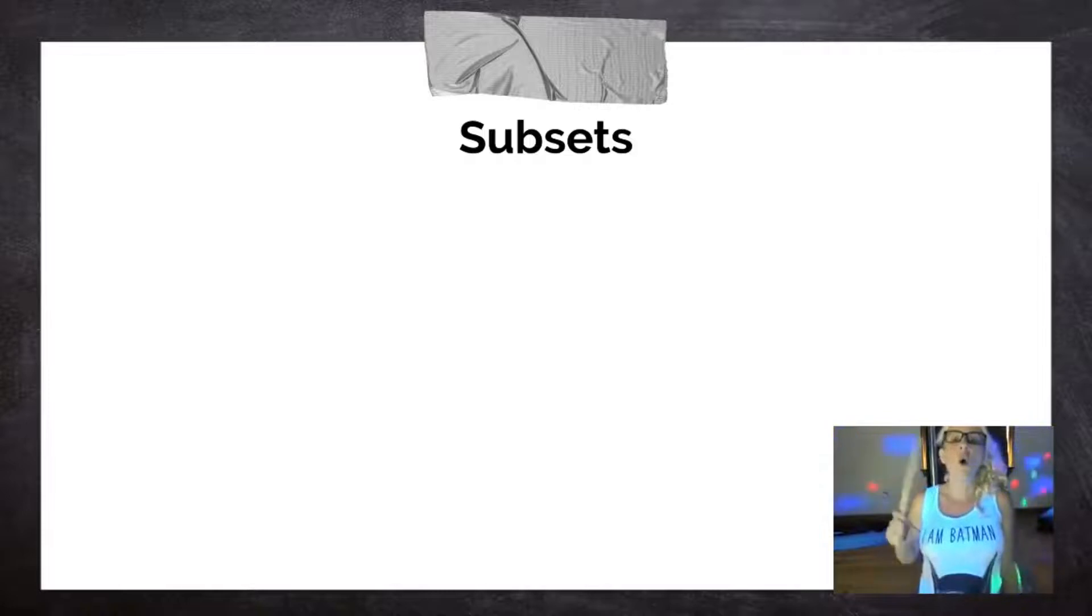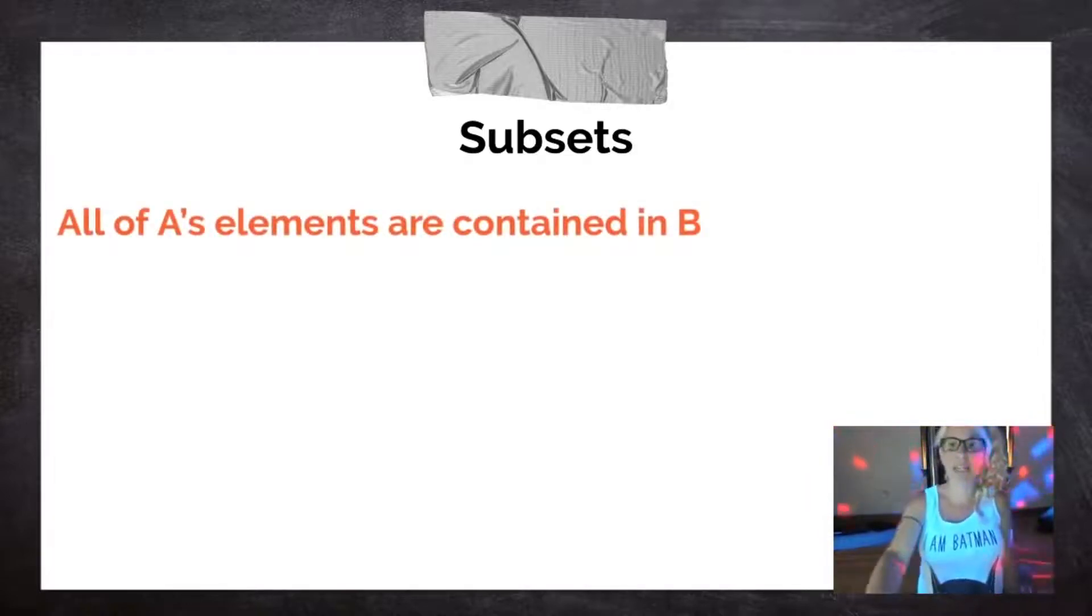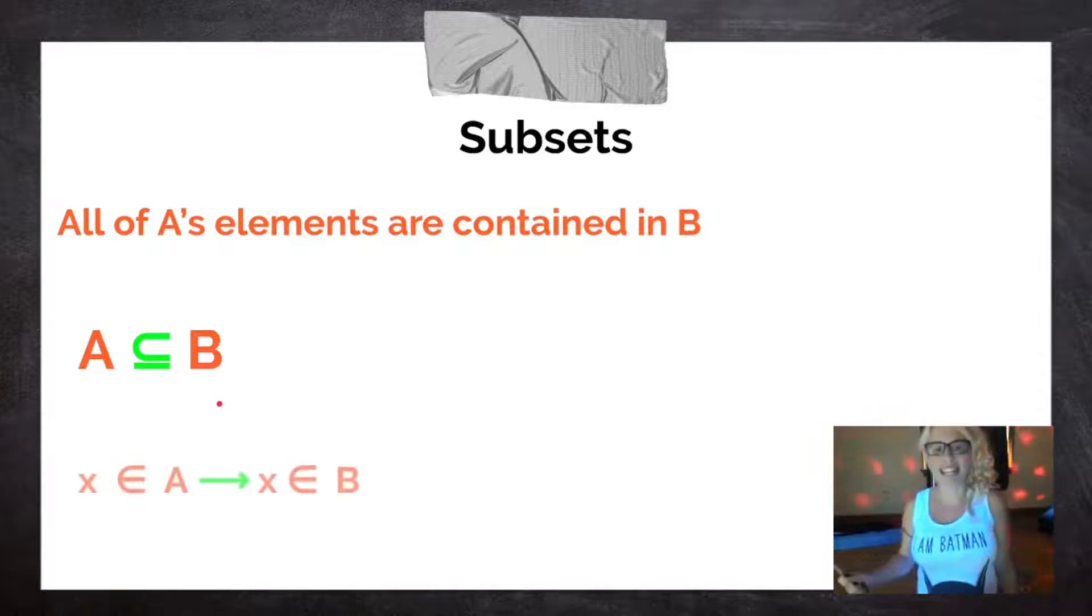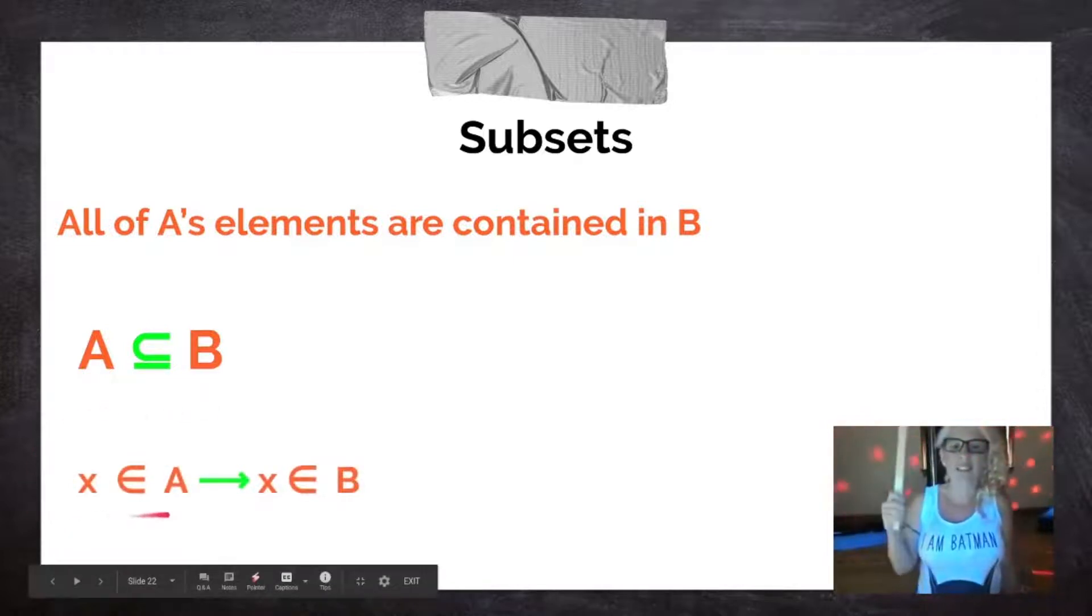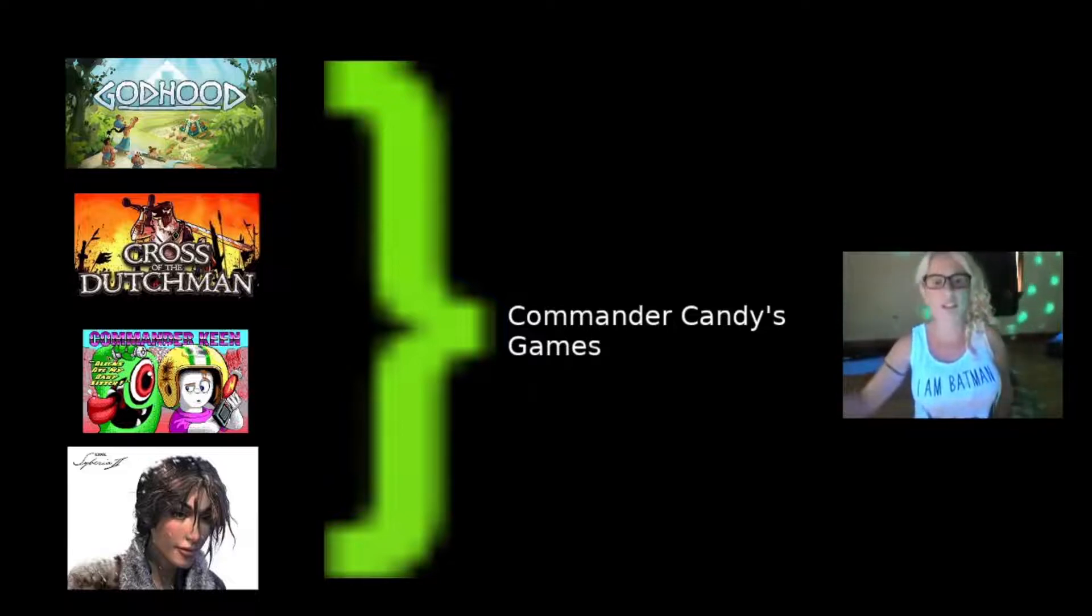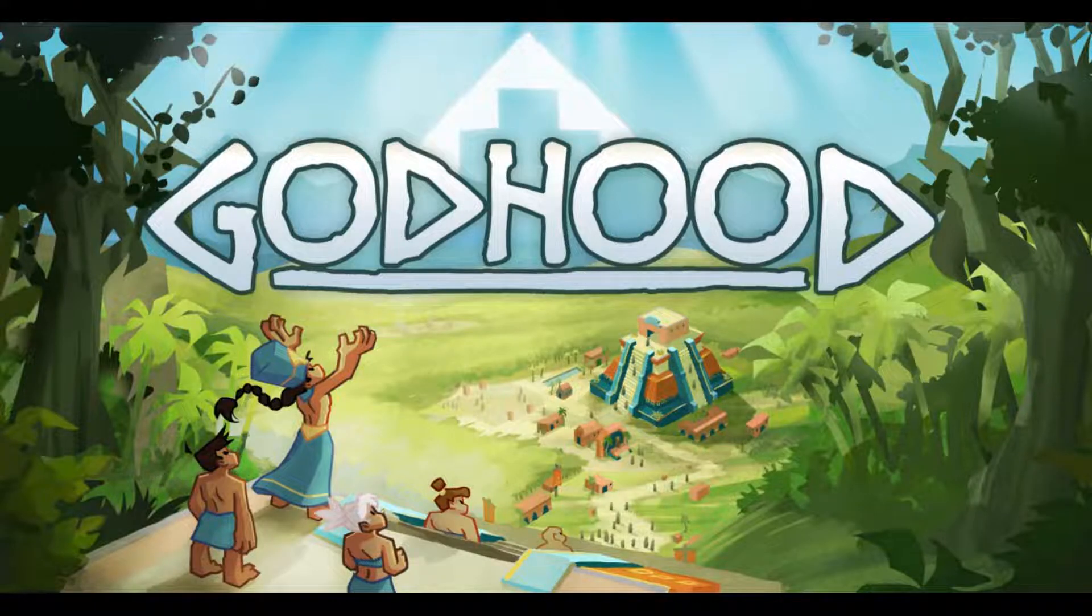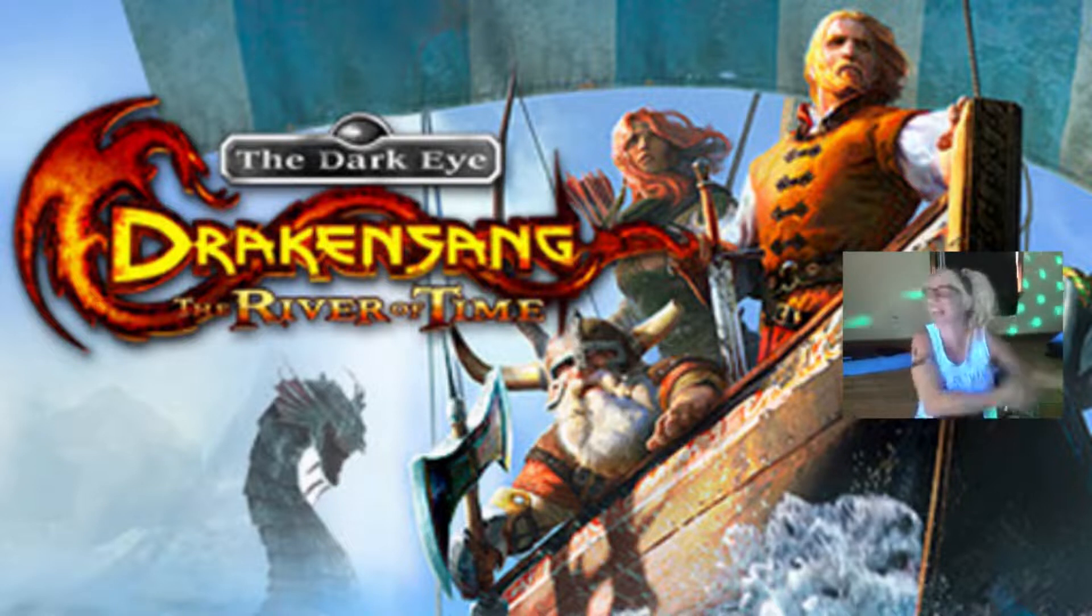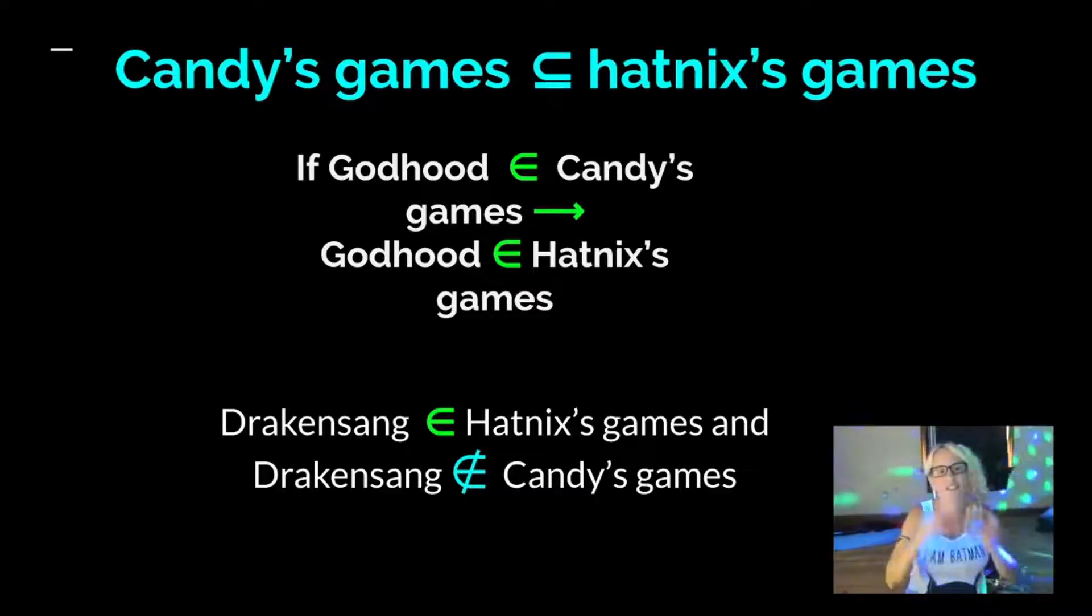Subsets. All of A's elements are contained in B. So if all of A's elements are contained in B, then A is said to be a subset of B. So if A is a subset of B, and X is an element in A, then X has to be an element in B as well. If every game that I own, Hatnix owns as well, and I own Godhood, that means that Hatnix has to own Godhood. But if we're not equal sets, if I'm just a subset of Hatnix, then just because Hatnix owns Drakensang doesn't mean that I own it too. If my games are a subset of Hatnix's games, any game I own, Hatnix owns too. But I don't necessarily own every game that Hatnix owns.